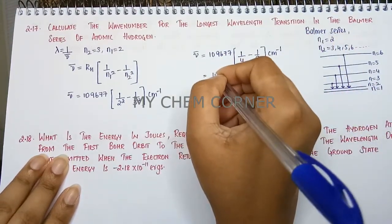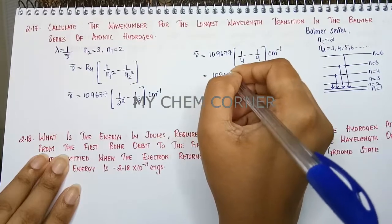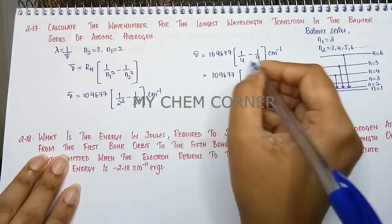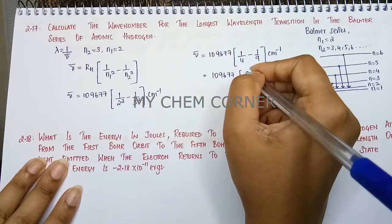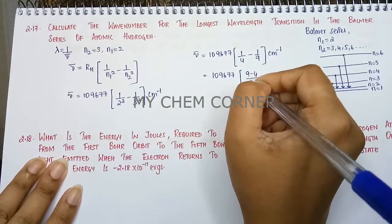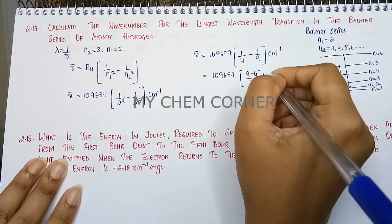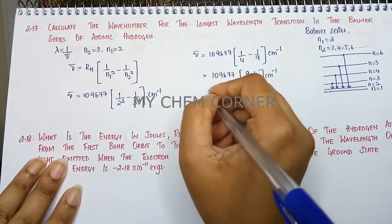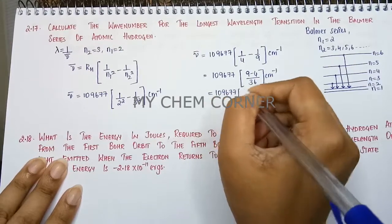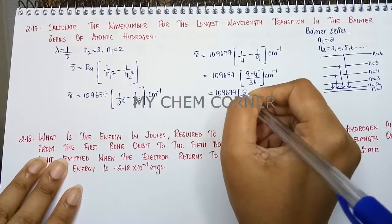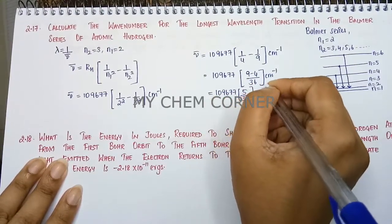This is 109,677. You take the LCM of this and when you write you get 9 minus 4 by 36 centimeter inverse. This is equal to 109,677, 5 divided by 36 centimeter inverse.